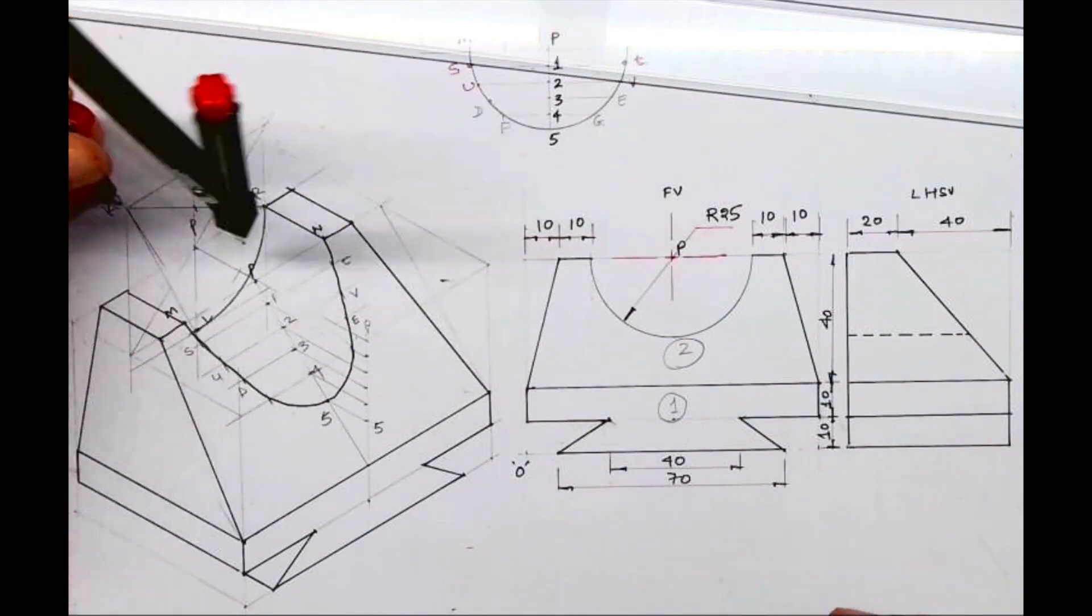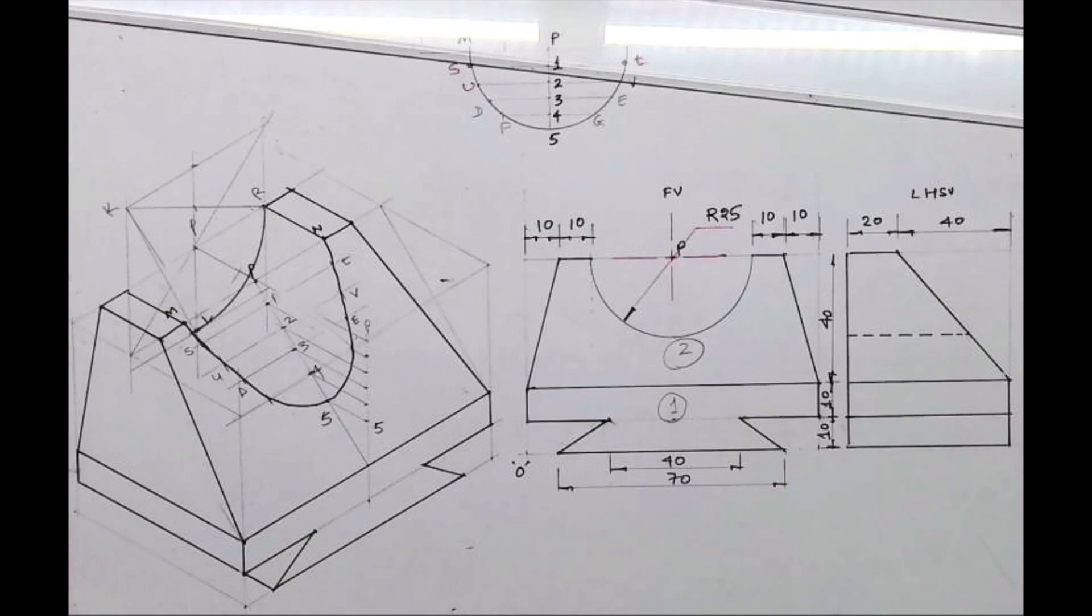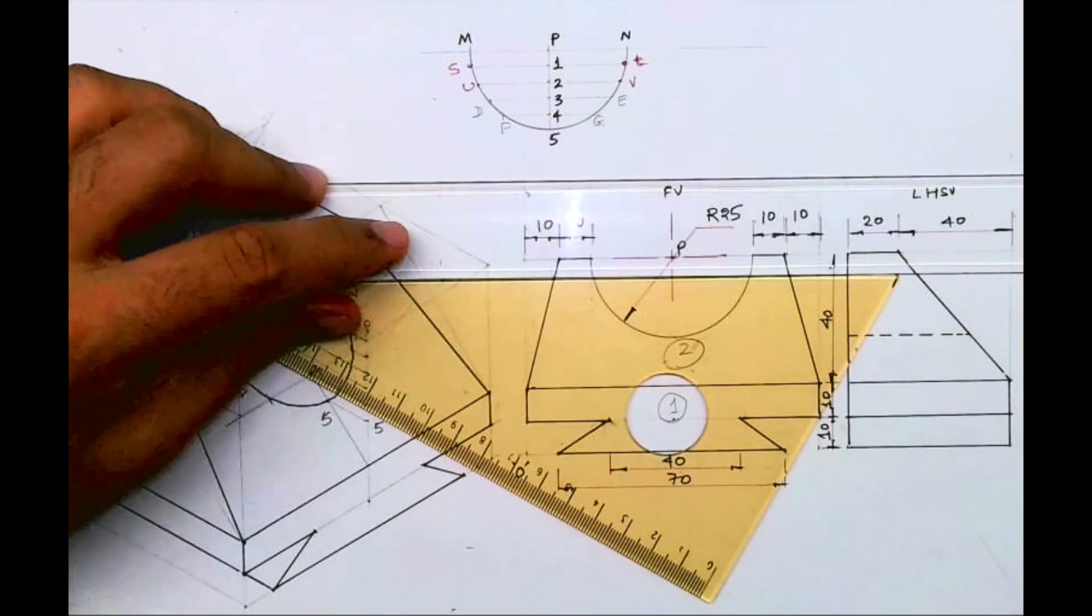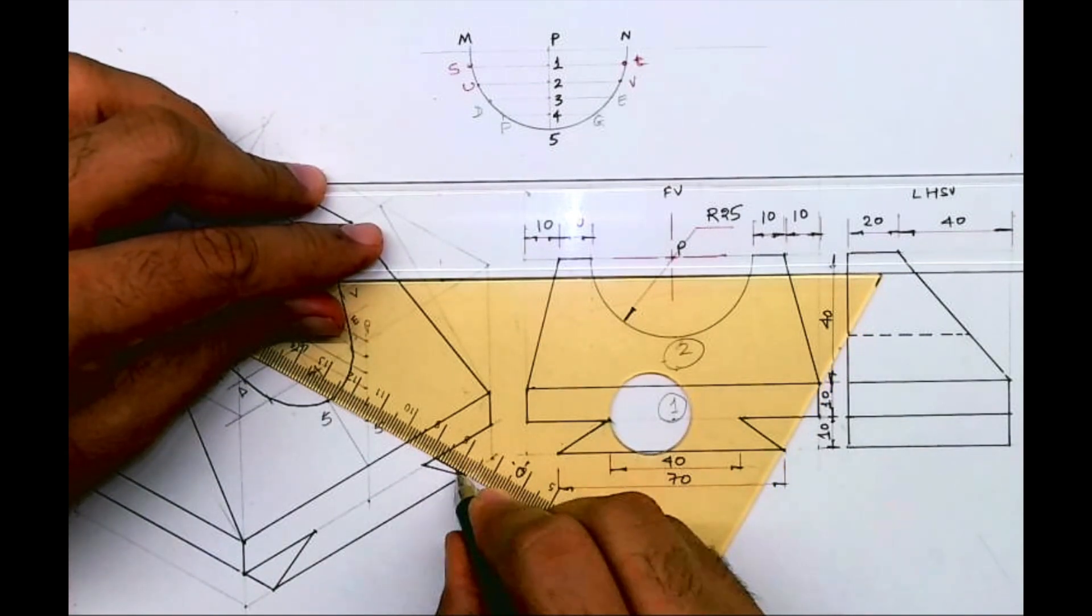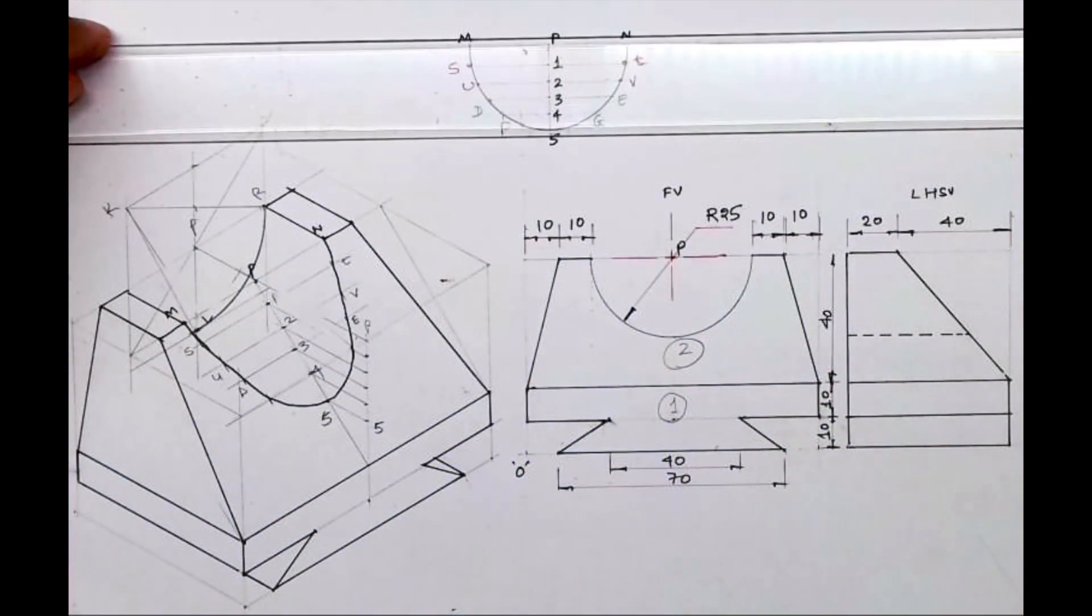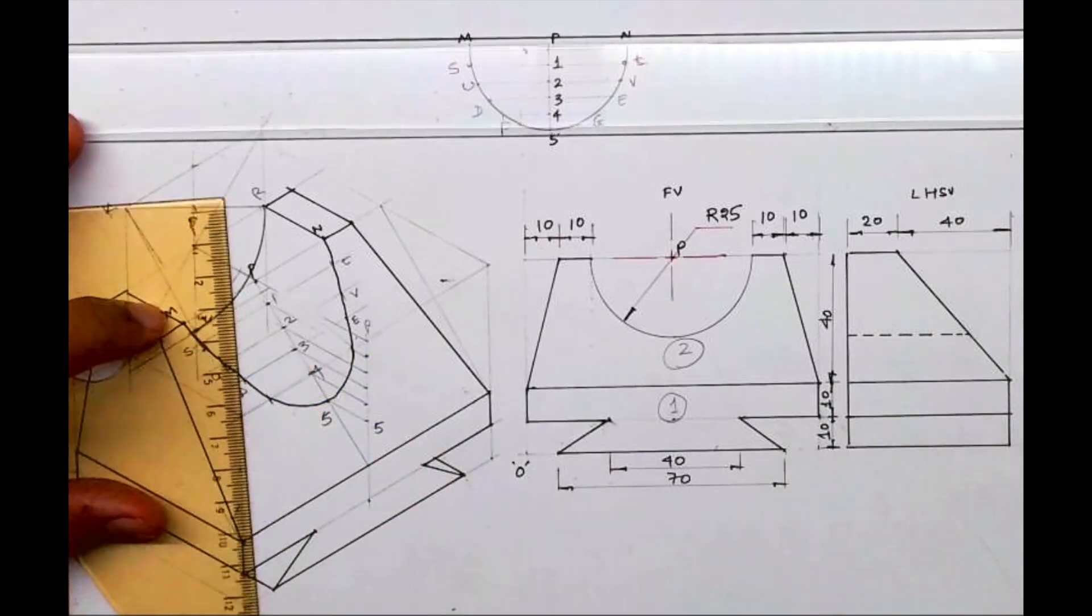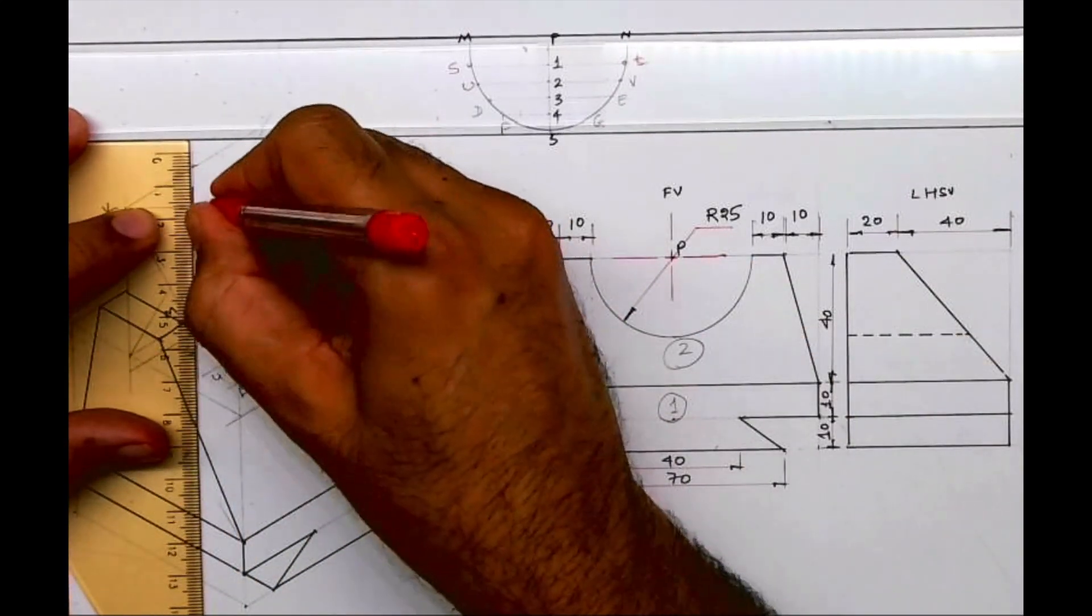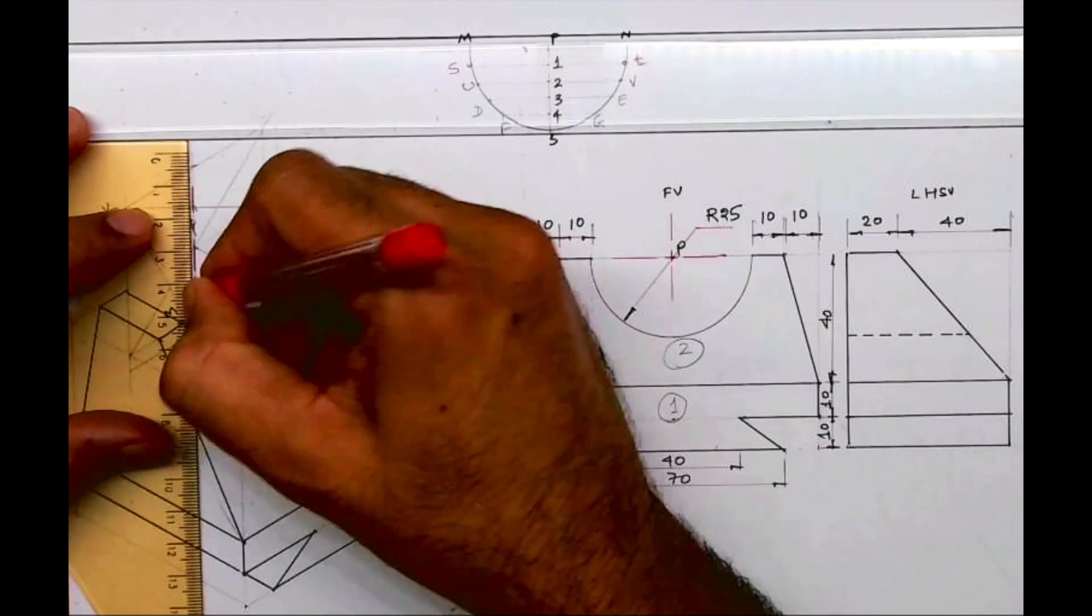And there is one more line which we need to draw. If you see at the bottom, this line, it will go behind. So I hope everyone understood this sum. It is Mumbai University sum for engineering drawing. Thank you.